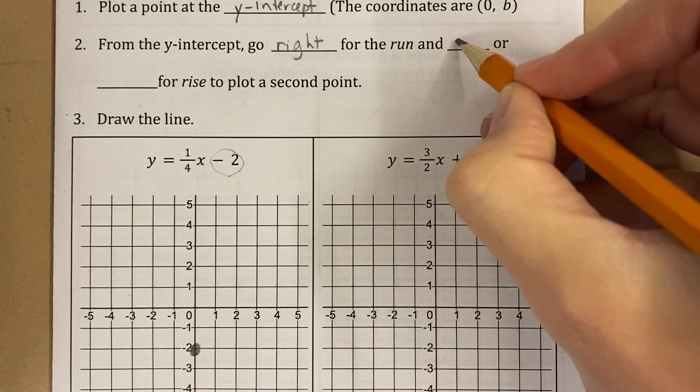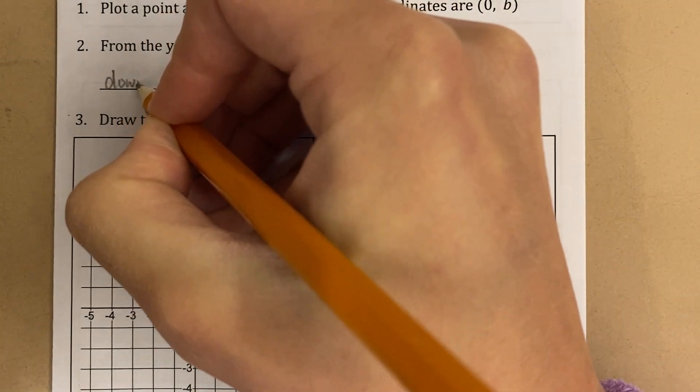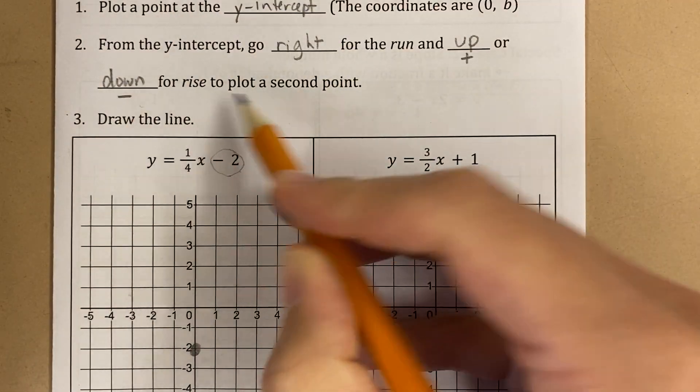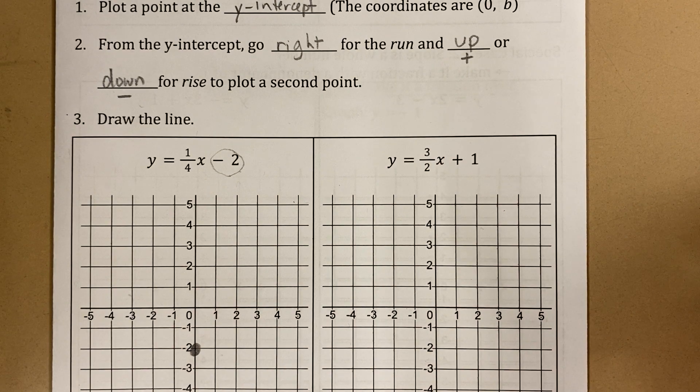And then I'm going to go either up, if the rise is positive, or down, if the rise is negative, to plot a second point.